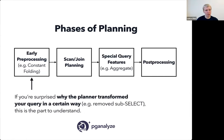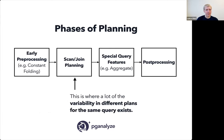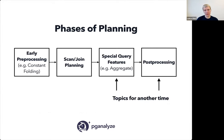First is early pre-processing, where the planner transforms a query in ways that are usually deterministic — it simplifies your query. For example, there's a concept called subquery pull-up, where even if you have a subselect, Postgres will move that subselect into the upper portion of the query to do joins at one level instead of using a subplan. Scan/join planning is one of the core functionalities and is where most of the variability in different plans exists. Special query features are things like aggregates, and post-processing is more relevant if you're hacking Postgres itself.